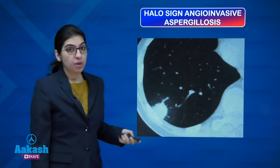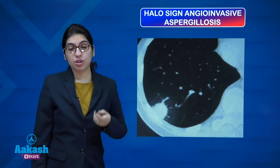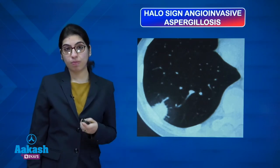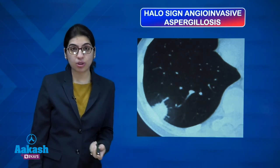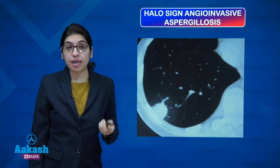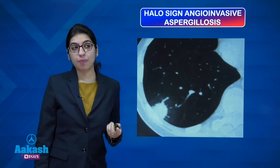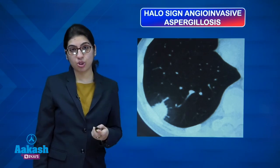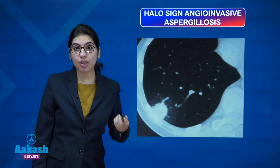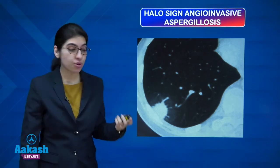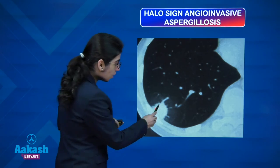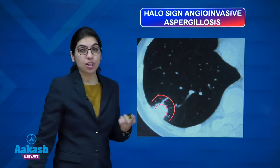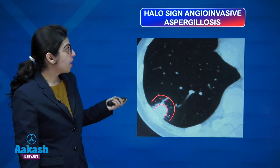If the patient is immunocompromised — with neutropenia, febrile neutropenia, on chemotherapy or radiotherapy — the resulting condition is angioinvasive aspergillosis. On CT scan, you will see a halo sign: a nodule with a halo of ground glass. This is angioinvasive aspergillosis.